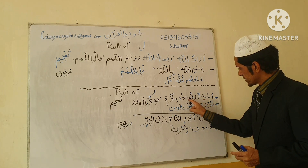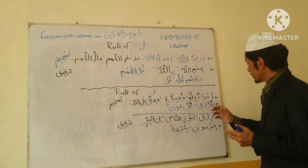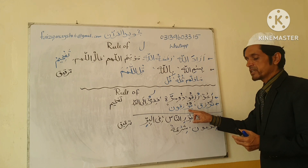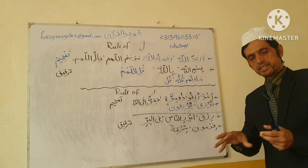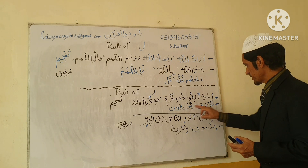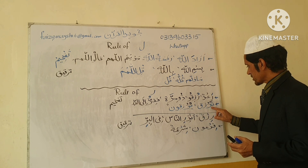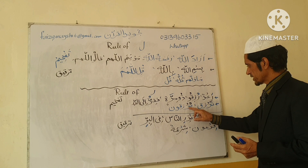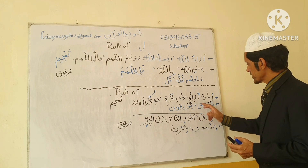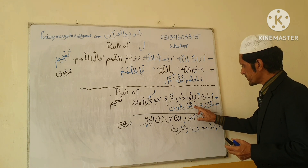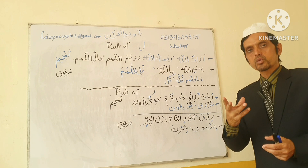When Ra is Saakin, we look at the letter before it. If before Ra Saakin there is Fathah or Dhamma, we still read with Tafkhim. For example: 'Tarzuku' — Ra Saakin with Fathah before it; 'Yurzaquna' — Ra Saakin. So: 'Tarzuku, Yurzaquna' — read with Tafkhim. And if there is Kasra on Ra, we read it with Tarqeeq. For example: 'Rizqun' — this is Tarqeeq in Ra.